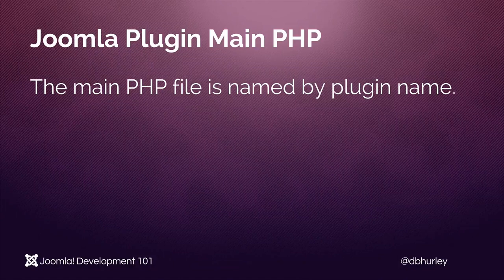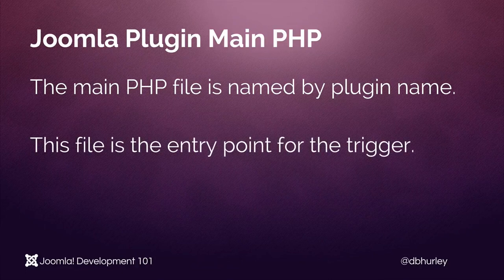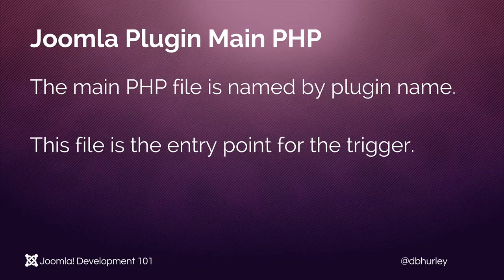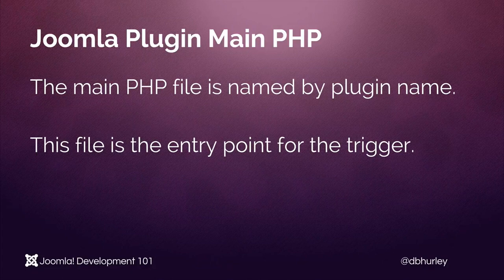First of all, this main.php file should be named by the plugin name. The reason this is important is because this is the entry point for the trigger. This is the file that Joomla is going to look for when trying to run your plugin.